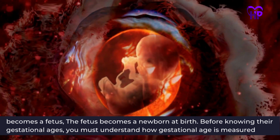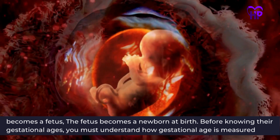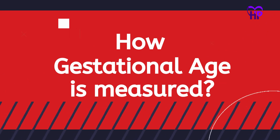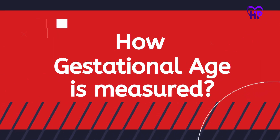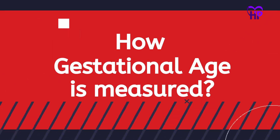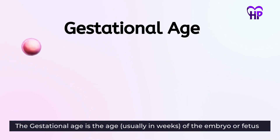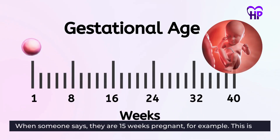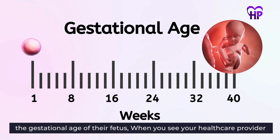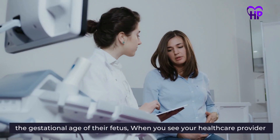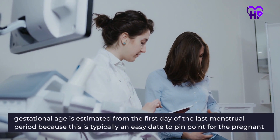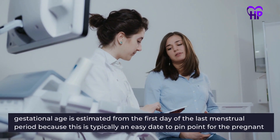Before knowing their gestational ages, you must understand how a gestational age is measured. The gestational age is the age, usually in weeks, of the embryo or fetus. When someone says they are 15 weeks pregnant, for example, this is the gestational age of their fetus. When you see your health care provider, gestational age is estimated from the first day of the last menstrual period.